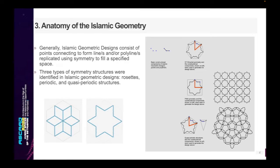Three types of symmetry structures were identified in Islamic geometric designs: rosettes, periodic, and quasi-periodic structures. The figure shown in this slide shows an example of three points connected with each other using a single polyline, and experimented with to create designs using these three structural orders.